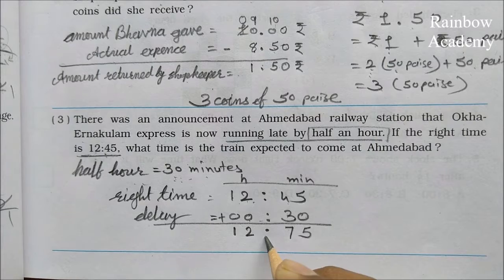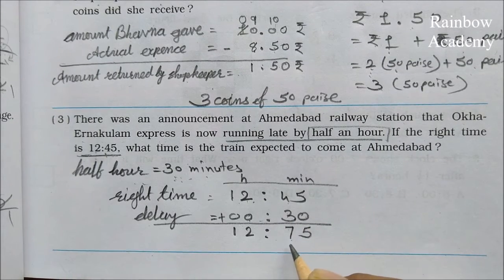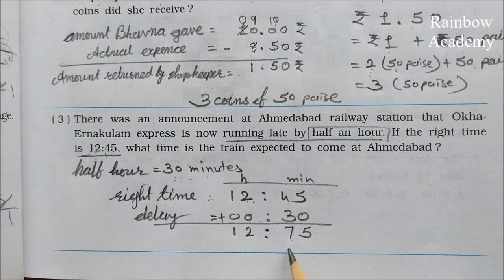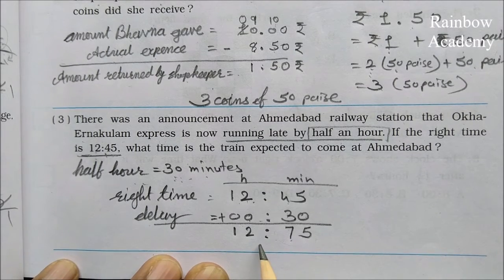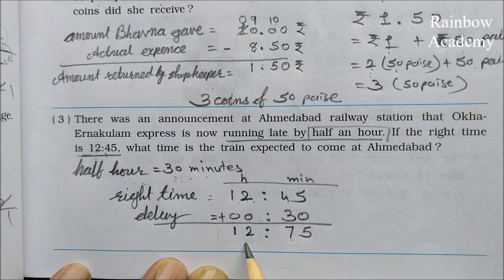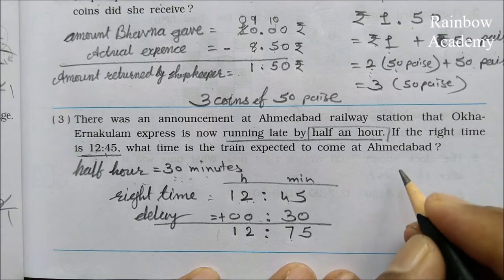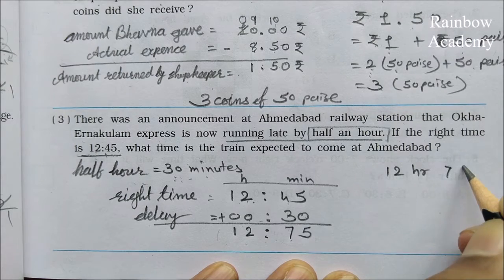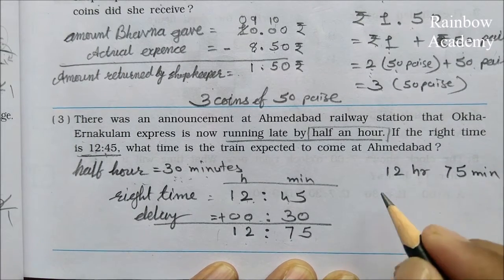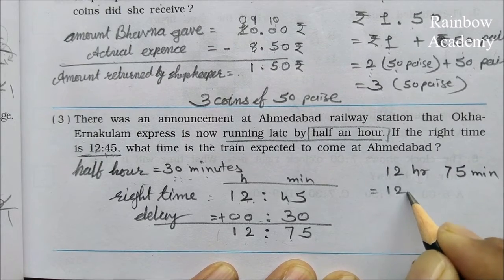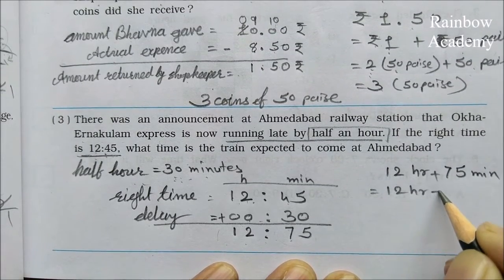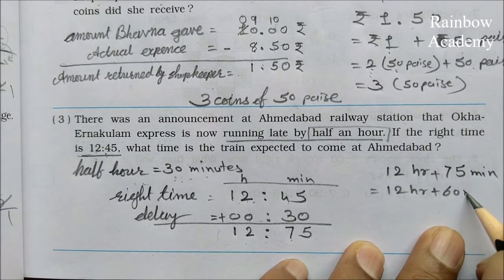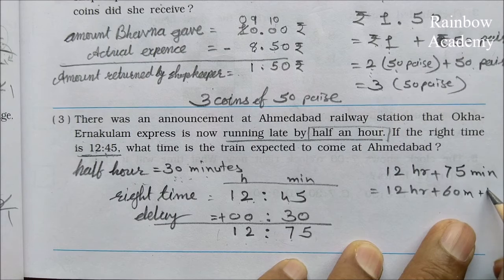The result is 12.75, but 12.75 is not valid because one hour has a maximum of 60 minutes. So we need to convert: 12 hours 75 minutes is equal to 12 hours plus 60 minutes plus 15 minutes.